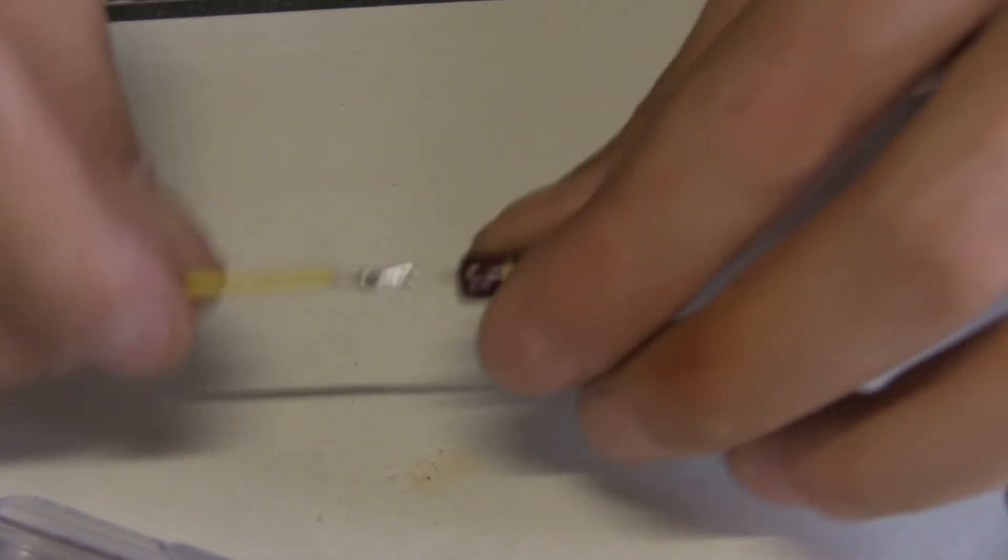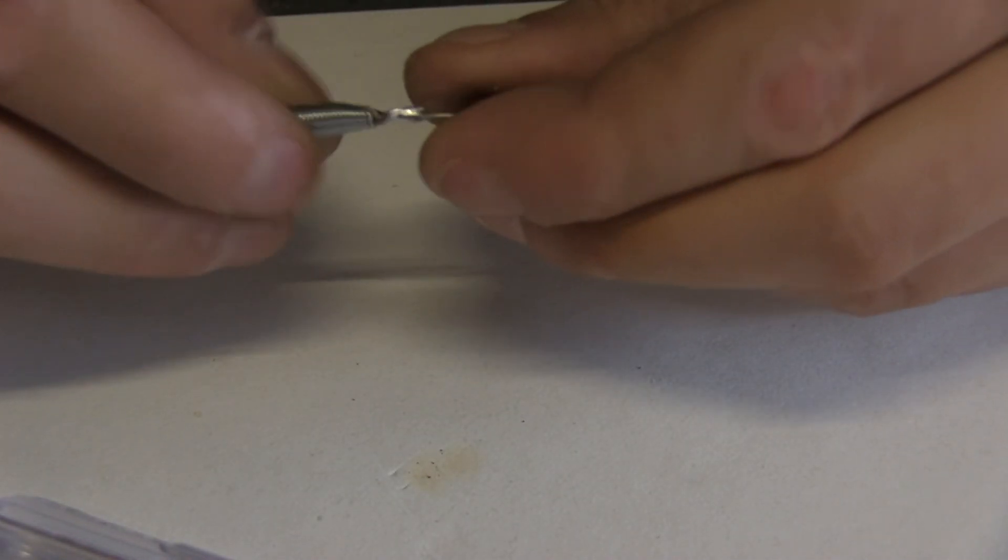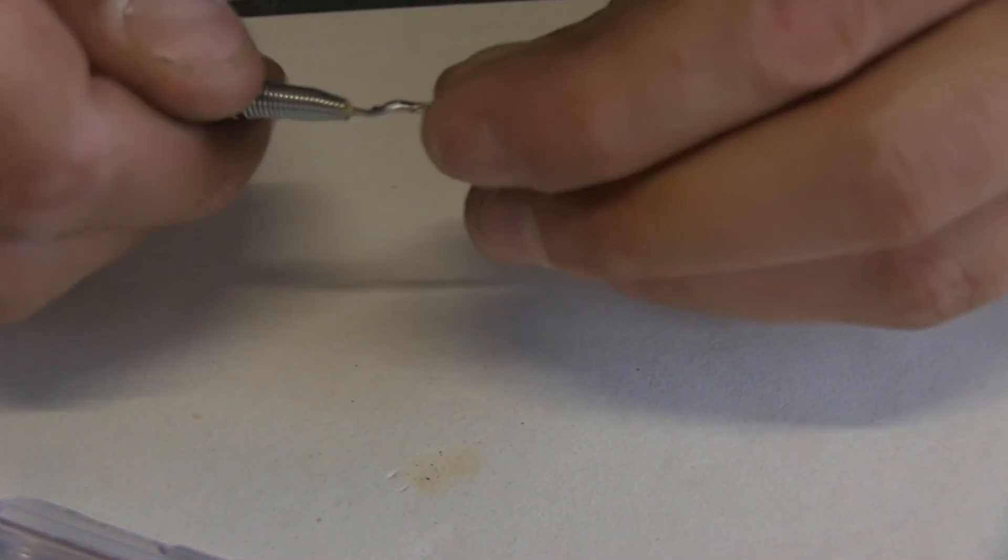So here we are, we have soldered the wire to the resistor. Let's hope the spring is going to get through. I doubt it, I'm going to shorten the spring, it's easy to do. It's not very hard metal, just using a wire cutter, and there we go. There we are, and it goes right in.